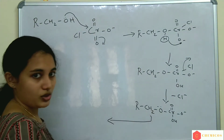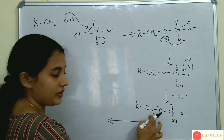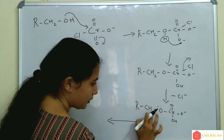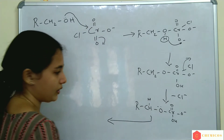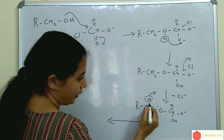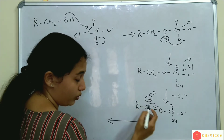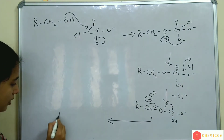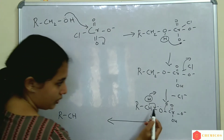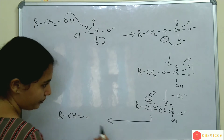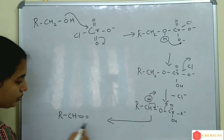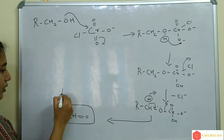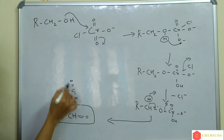Now one of the hydrogens on CH₂ is eliminated as H⁺ and combines with Cl⁻ to form HCl. This hydrogen is eliminated and this bond's electrons shift over and this bond breaks. The product is R-CH with a double bond to O — this compound, R-CHO, is the aldehyde.